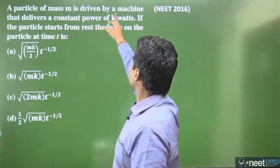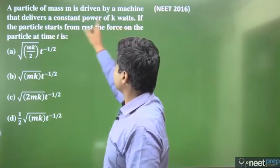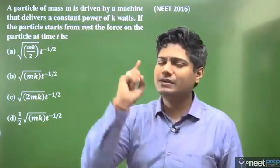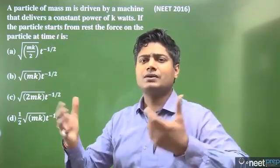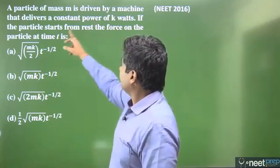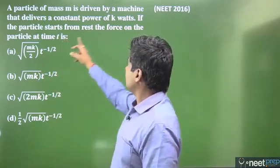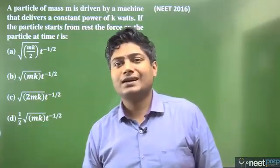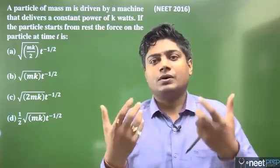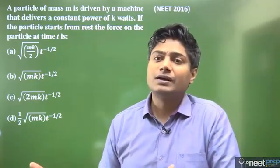A particle of mass M is driven by a machine that delivers a constant power. If the particle starts from rest, the force on the particle at time t, force? So the method to write force is write velocity from constant power.